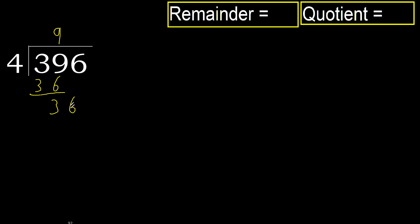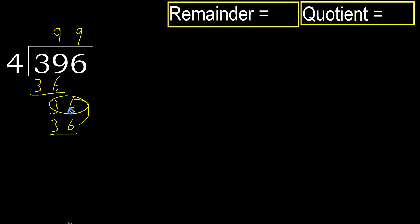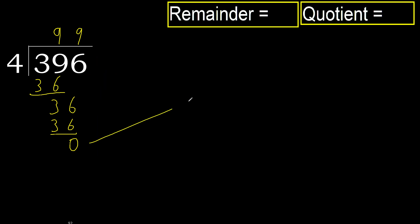Next, bring down 6. 4 multiplied by 9 is 36, not greater. Subtract. Next digit — that is not a number, therefore finish it.